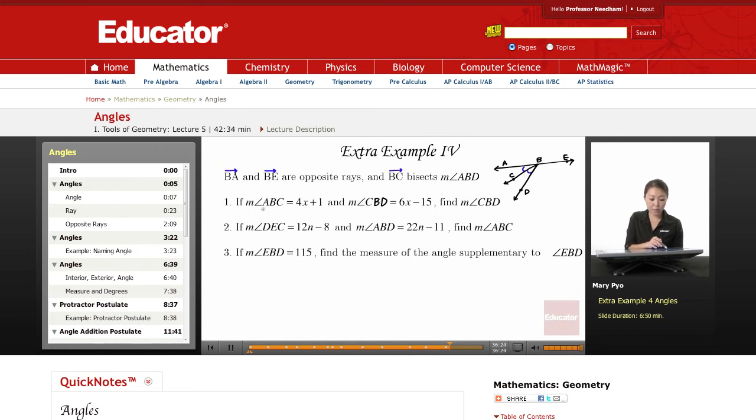Okay, so if measure of angle ABC equals 4X plus 1, measure of angle CBD equals 6X minus 15, then find measure of angle CBD. So we have these two angles. Now when you draw a little line like that, that just means that they're congruent to each other, they're equal.